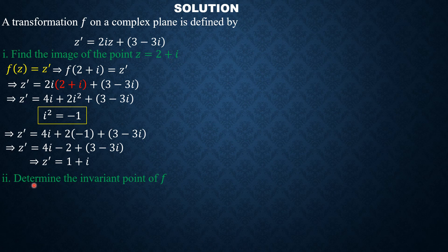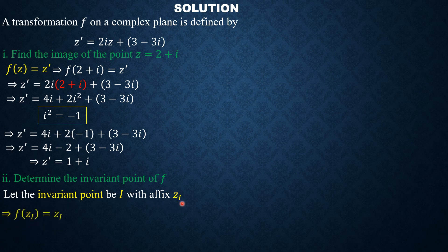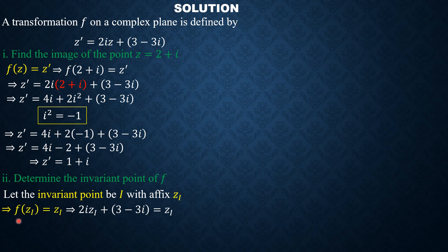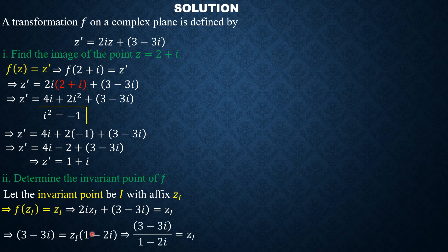The second part is asking us to determine the invariant points of f. If the invariant point has affix zi, it simply means f(zi) = zi, meaning under the transformation f the point is mapped onto itself. So we replace z with zi to get 2i·zi + 3 - 3i = zi. Doing a little algebra, we get zi = (3 - 3i) / (1 - 2i). It is left to you to rationalize: multiply the top and bottom by the conjugate of the denominator. Do comment your answer in the comment section so we can verify it.